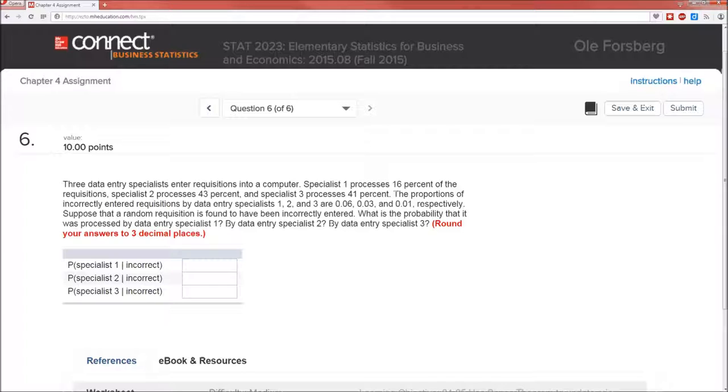Next sentence. The proportions of incorrectly entered requisitions by data entry specialists are 0.06, 0.03, and 0.01. The 0.06 is actually the probability the requisition is incorrect given it was done by specialist 1. The 0.03 is the probability the requisition was incorrect given it was done by specialist 2. And 0.01 is the probability that the requisition was incorrect given it was done by specialist 3.